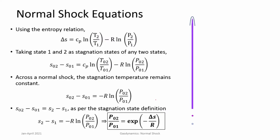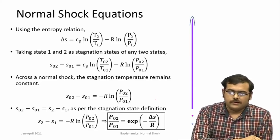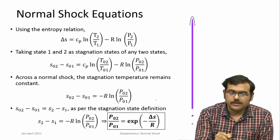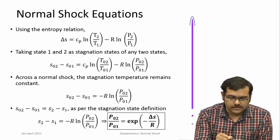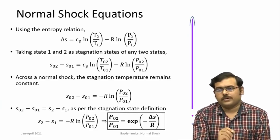We know that stagnation temperature across the shock is constant by virtue of the process being adiabatic, but what about stagnation pressure? To relate stagnation pressure across the shock, we go again to the entropy relation. The entropy change is Δs = Cp·ln(T2/T1) - R·ln(P2/P1), and we now apply this to the stagnation conditions.